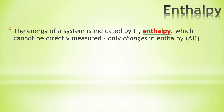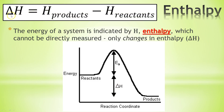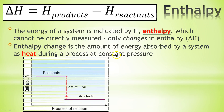Let's talk about enthalpy. The energy of a system is indicated by H, which means enthalpy, which you really can't directly measure. All you can really measure are changes in enthalpy. We know how much energy the reactants have, we know how much the products have, and we can figure out the change in energy. Delta H is the change in enthalpy — that's what we can measure. Delta H is measured as the enthalpy of the products minus the enthalpy of the reactants. If it's negative, heat energy was given off; if it's positive, heat energy went in. Enthalpy change is the amount of energy absorbed by a system as heat during the process at constant pressure.